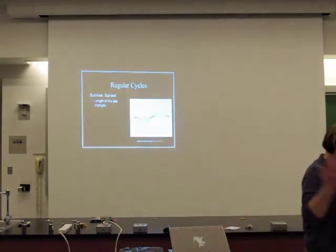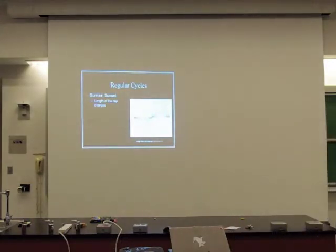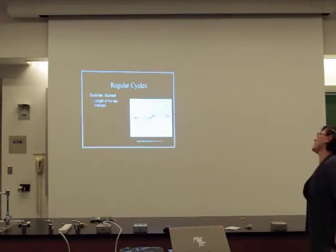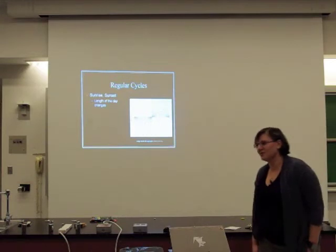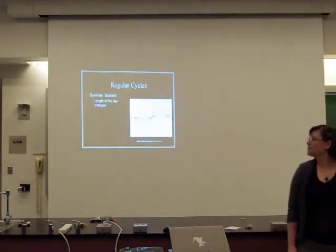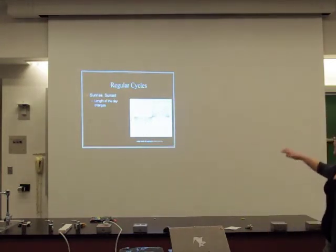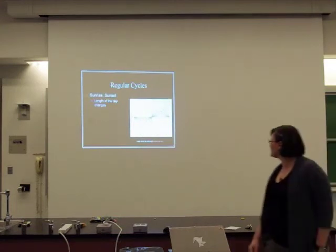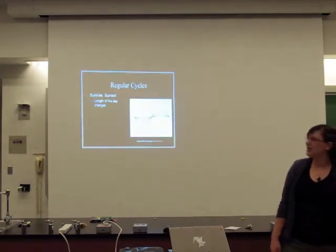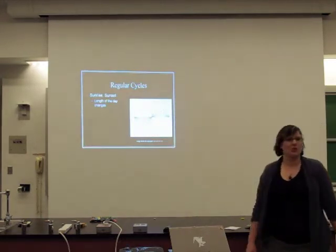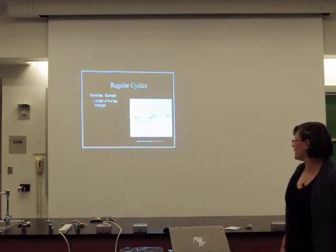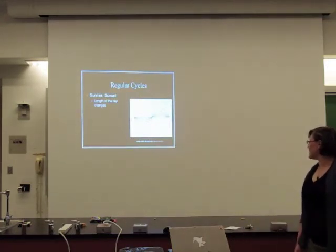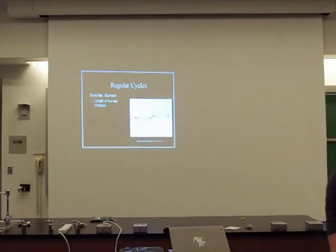Now, I said these cycles were regular, but they might also change on a seasonal basis. For example, the length of the day changes. Here we are in Las Vegas at a latitude of about 36 degrees north. Here's a plot of the length of the day versus the month of the year. If you're on the equator, it's always 12 hours long. But if you move more towards the north, like in Las Vegas, then the day will become longer and shorter during the course of the year.